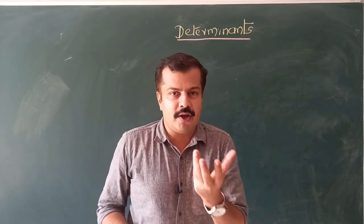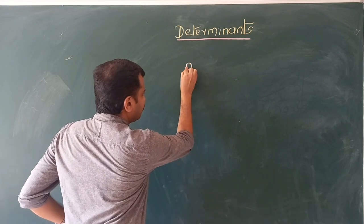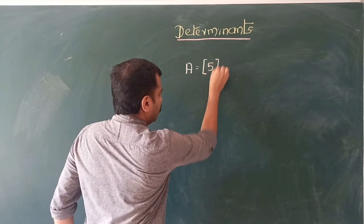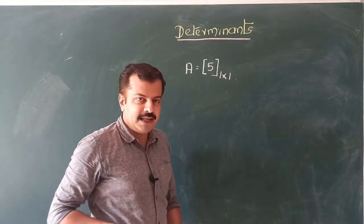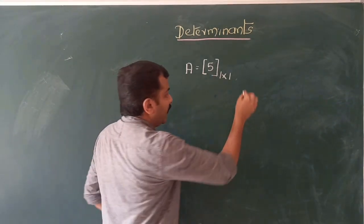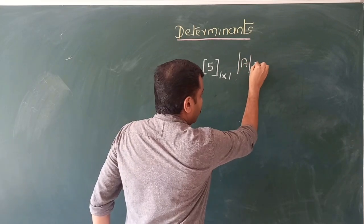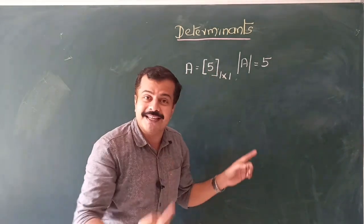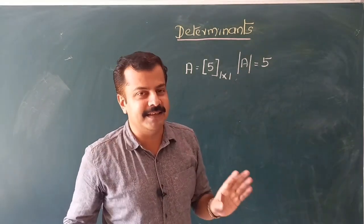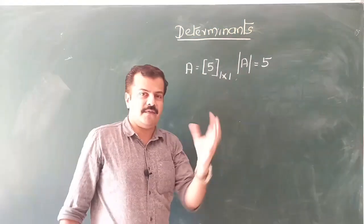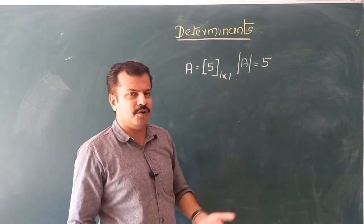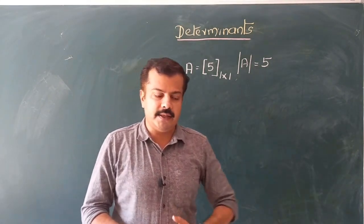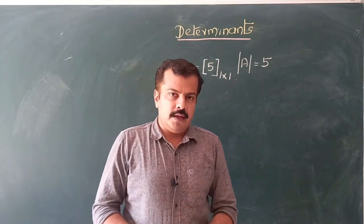We can calculate determinants only for square matrices. For the smallest case — a 1×1 matrix — the determinant of A is designated in the usual way. For a 1×1 square matrix, that single number itself is the determinant. We don't often encounter a 1×1 matrix, so we'll proceed to analyze 2×2, 3×3, 4×4 matrices and so on.